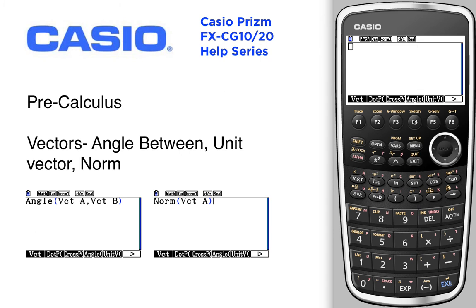We're going to find the angle between vector A and vector B. Vector A is (1, 2) and vector B is (2, 5). The angle between those two vectors is 4.7 degrees.